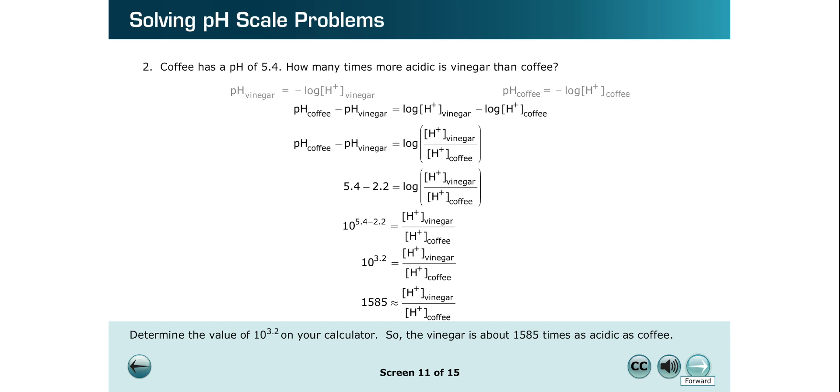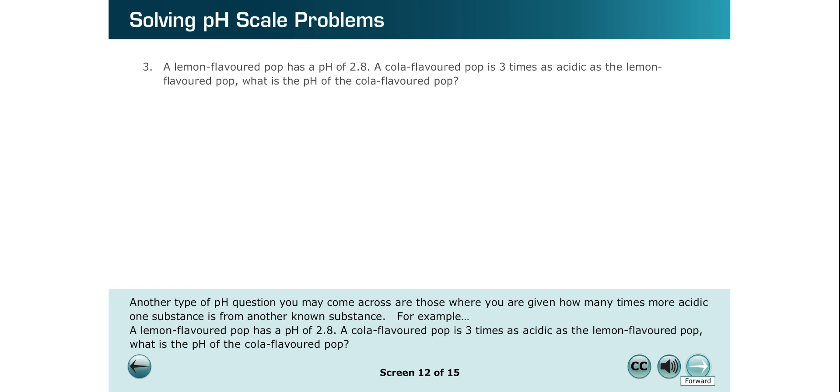Another type of pH question you may come across are those where you are given how many times more acidic one substance is from another known substance. For example, a lemon-flavored pop has a pH of 2.8. A cola-flavored pop is three times as acidic as the lemon-flavored pop. What is the pH of the cola-flavored pop?